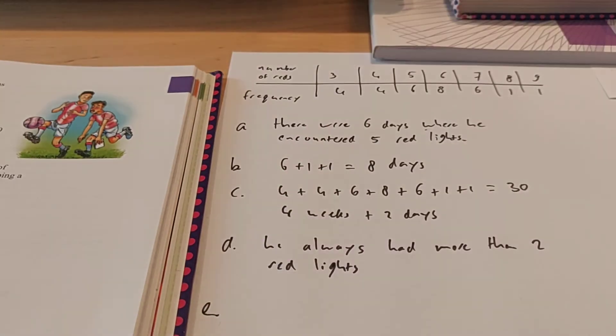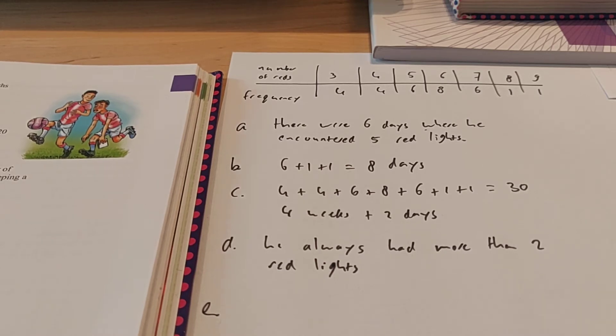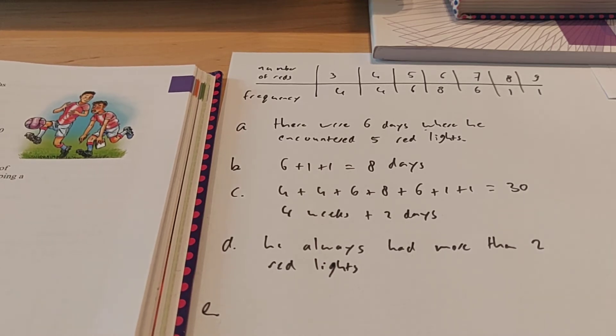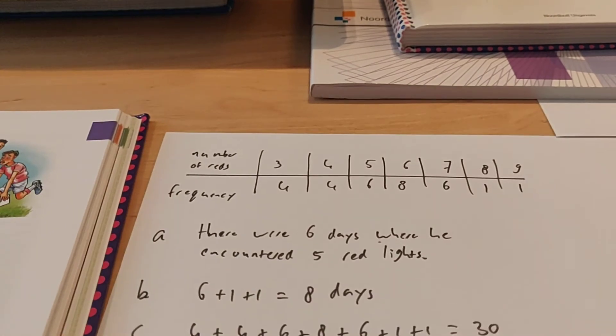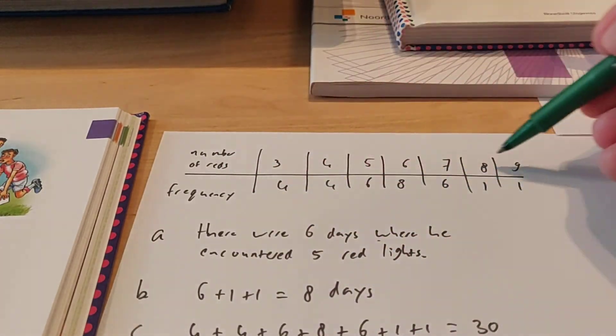There was not one day where he encountered 0 or 1 or 2 red lights. I mean, if he did, he would be very lucky, because he could keep driving, right? Question E says, draw the histogram for the data in this frequency table. So here we have the frequency table. So you need to make a histogram of this.